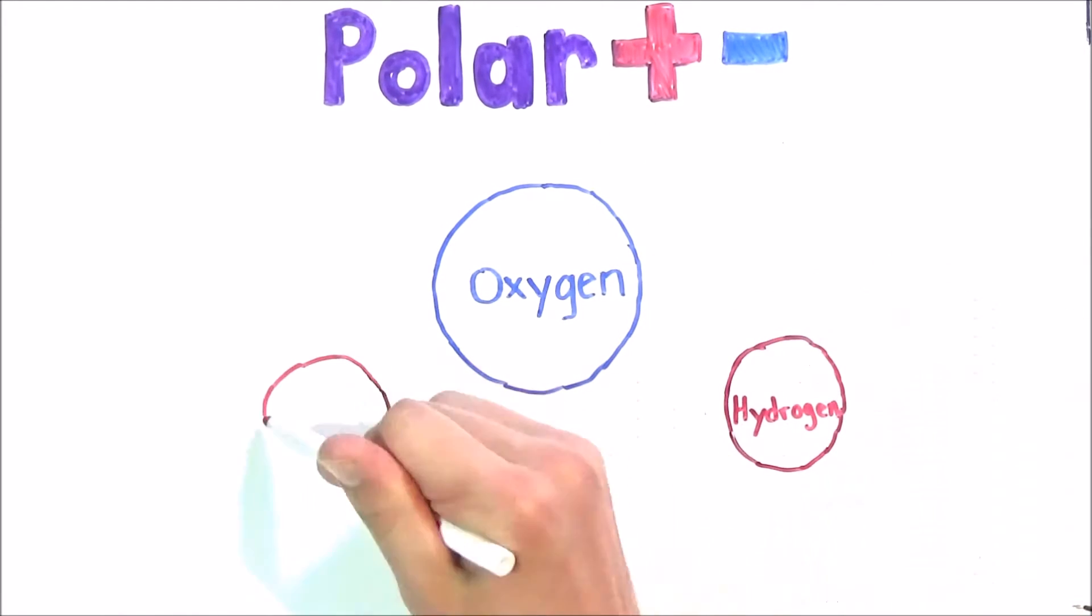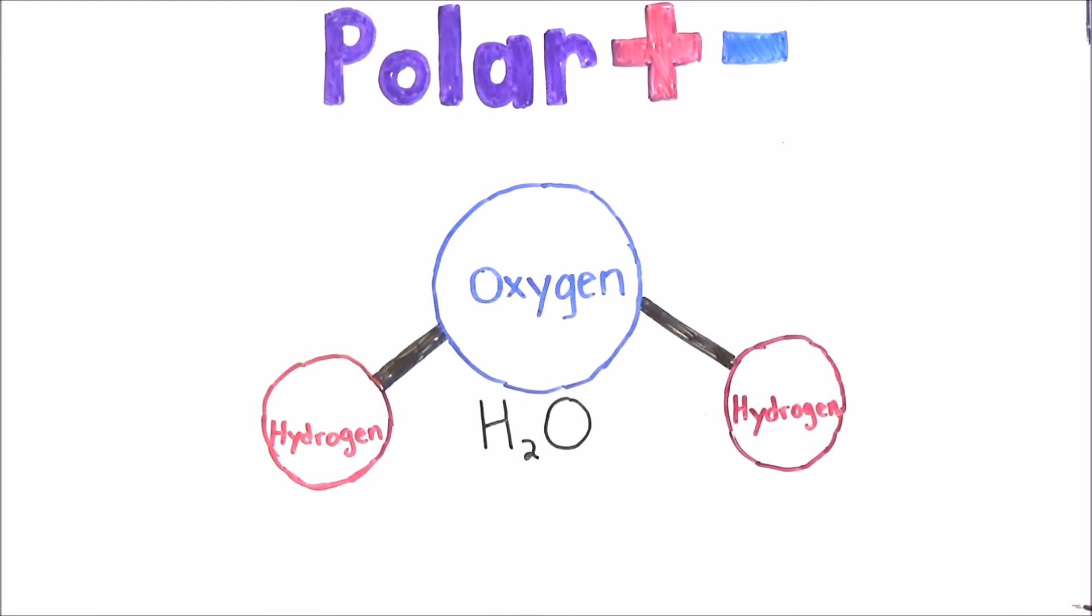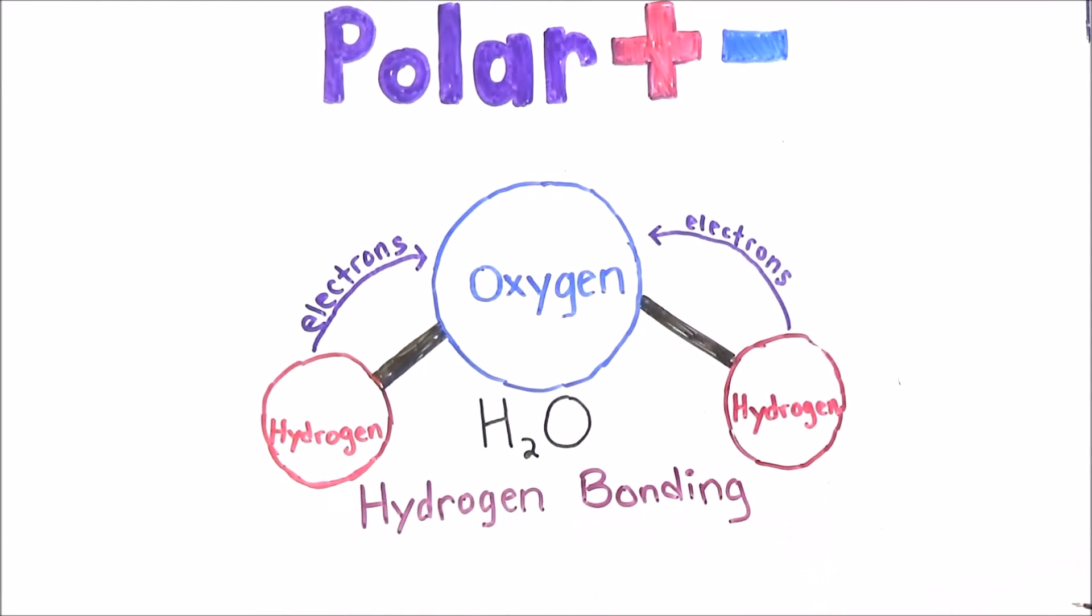In H2O molecules, oxygen is electron-loving, or electronegative, and the hydrogens are willing to lend it some electrons. Since oxygen is a highly electronegative atom and hydrogen readily lends it some electrons, we call this hydrogen bonding.